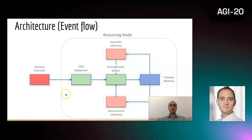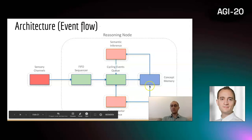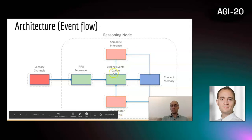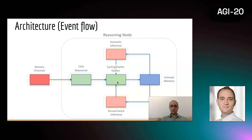This is essentially the entire picture. We receive information that goes into the FIFO sequencer to be sequenced into sequences, and it ends up as events in the cycling events queue. From there, elements are taken out to form concepts which are linked by implications and subterm relationships. If there is a relation with implication, it can use it for sensorimotor inference, and if there is a subterm relationship, it can use the concept for semantic inference. The results of those inferences go back into the cycling events queue, and this is essentially the entire system.